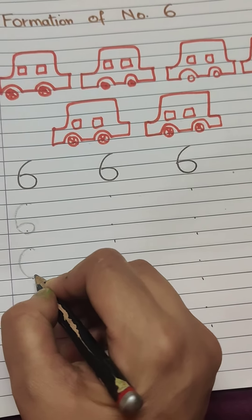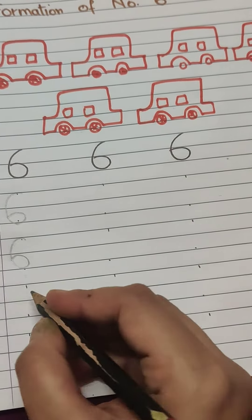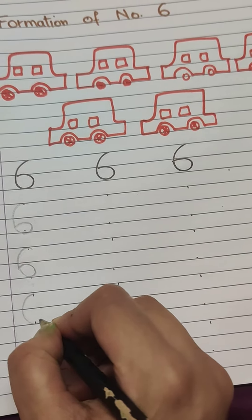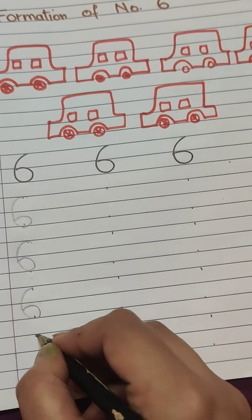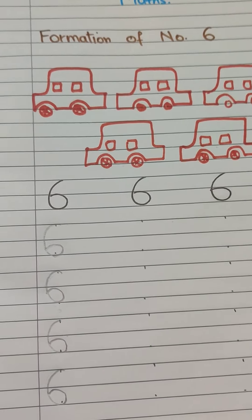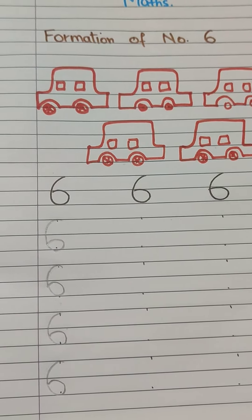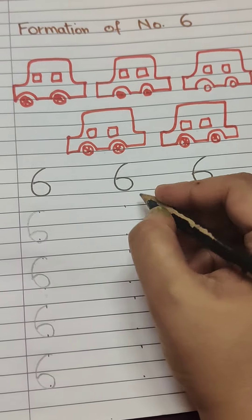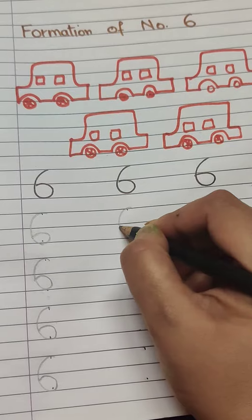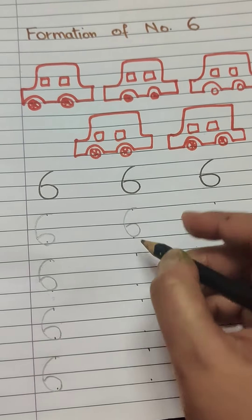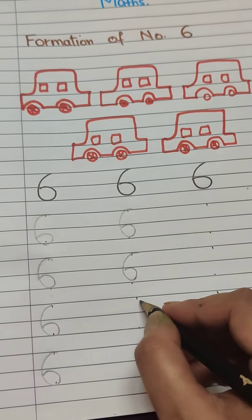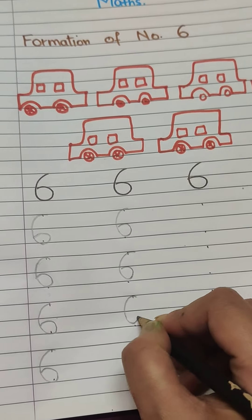Curve, and then close. Curve, then close it. Curve and close it. So the first row has been done. Come to the next line. Curve — the more we write, the more we practice, the more we learn.